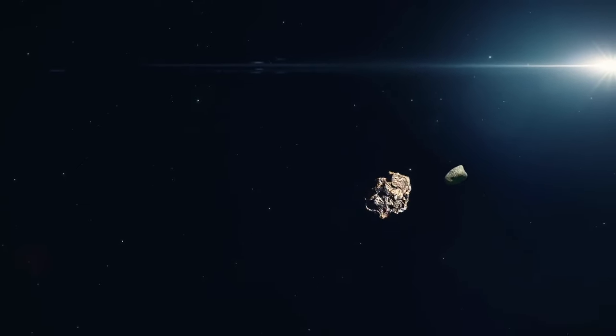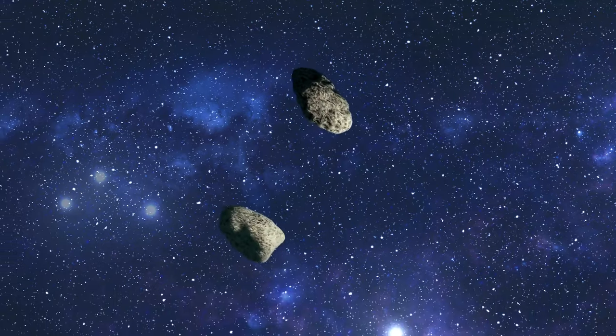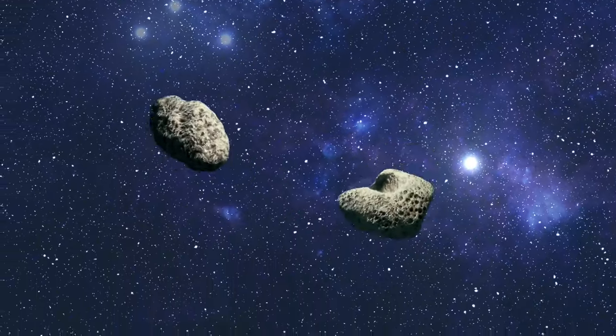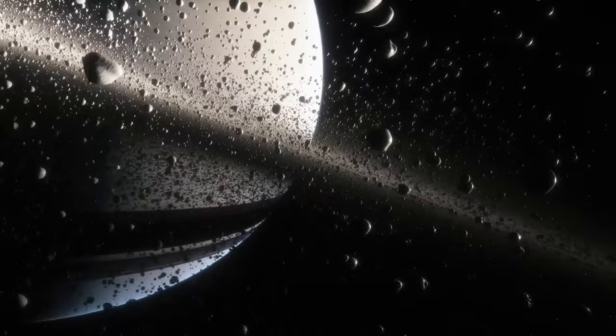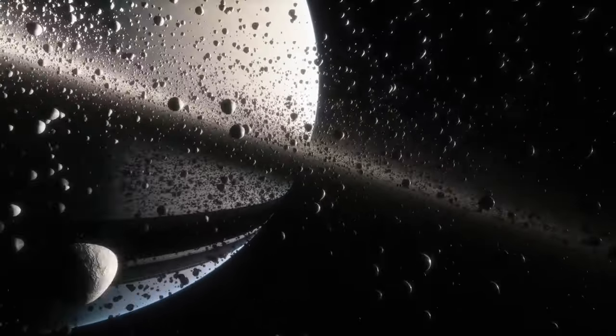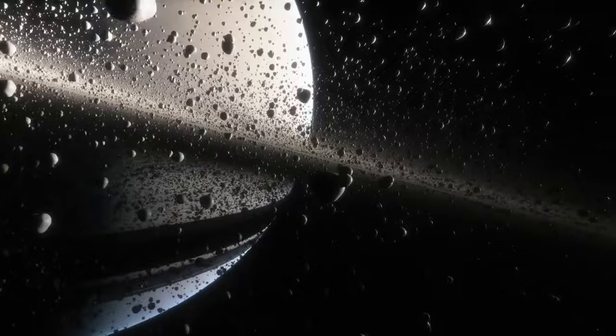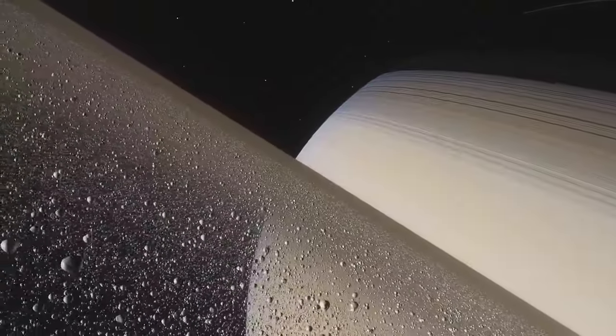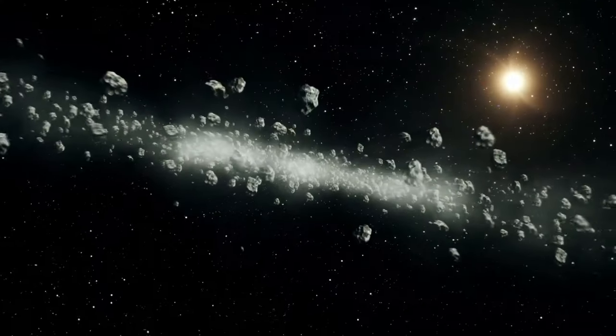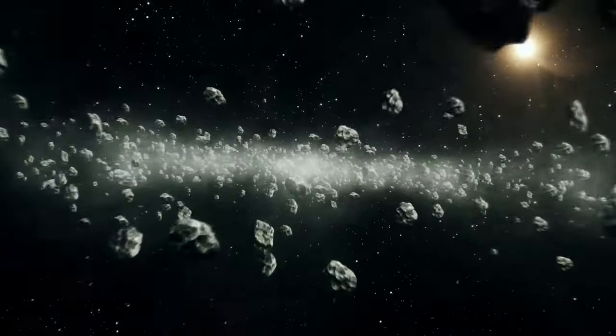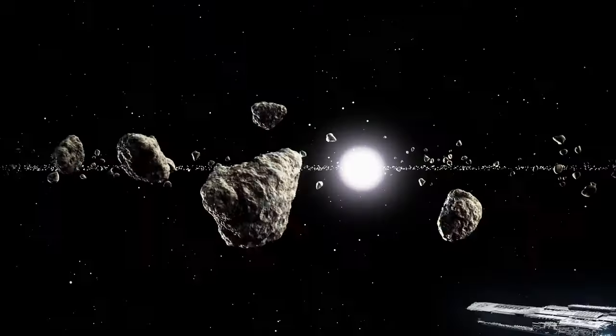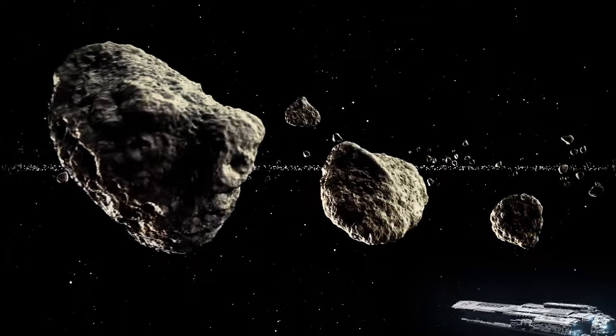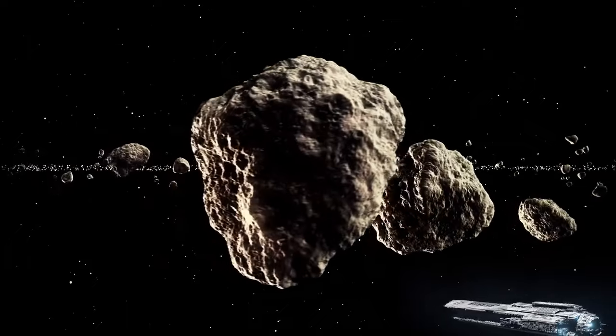Funnily enough, some asteroids have moons of their own. And there are even asteroid binaries where two asteroids of similar size orbit each other. The asteroid belt located between the orbits of Mars and Jupiter has the largest number of asteroids in our solar system. There are millions of space rocks there of various shapes and sizes. But despite such a huge number of asteroids, they're widespread across the vastness of the cosmos. And if you accidentally wandered into that region, the chances of your spacecraft colliding with an asteroid would be quite low.